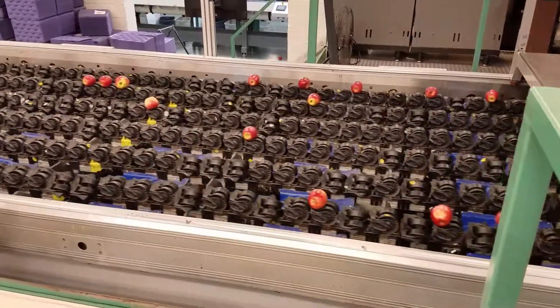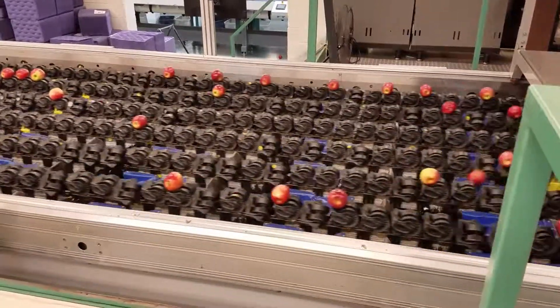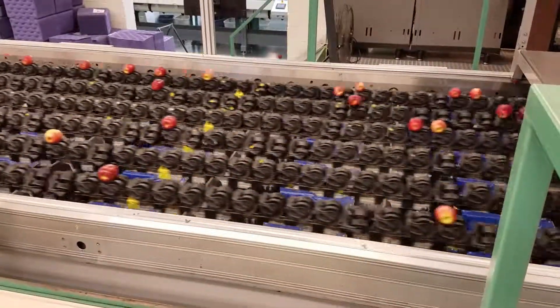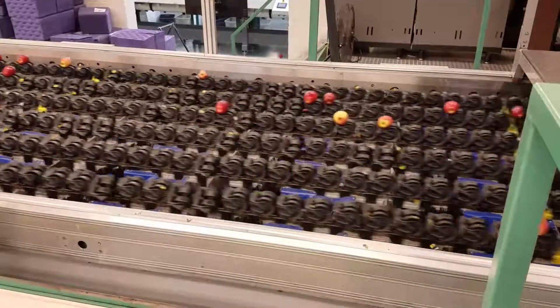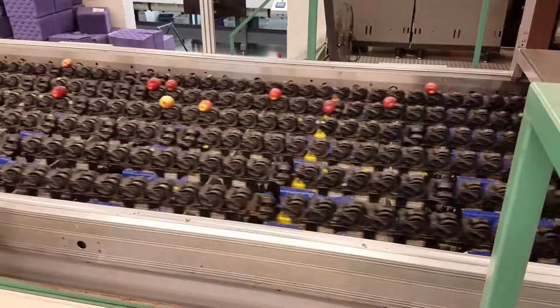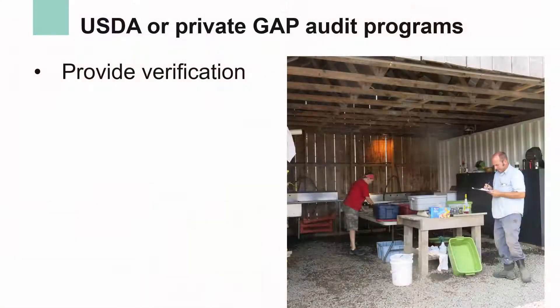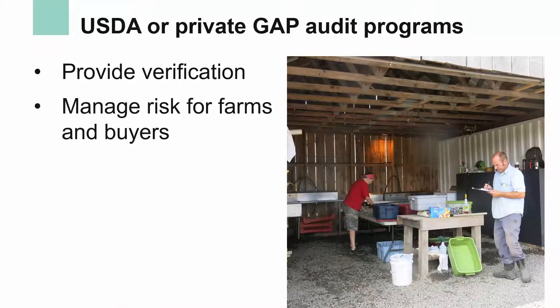How do you know if you're doing everything you can to minimize the risks in your operation? A GAP audit can help. The USDA, as well as private inspectors, can help improve the risk management of your operation.